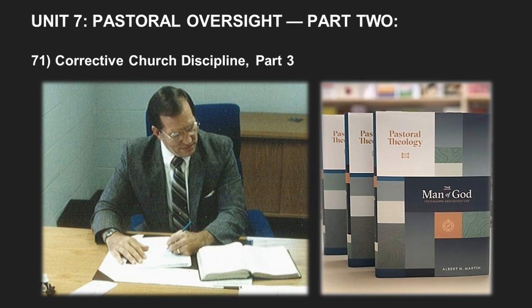And then the third necessary attendant is what Owen calls 'a due sense of the future judgment of Christ. For we herein judge for Christ in the matters of His house and of His kingdom. Woe to them who dare pronounce this sentence of excommunication without a persuasion on good grounds that it is the sentence of Christ Himself. And there is a representation also in it of the future judgment, when Christ will eternally cut off and separate from Himself all hypocrites and impenitent sinners.' So we have these five basic warnings with respect to the administration of church discipline.